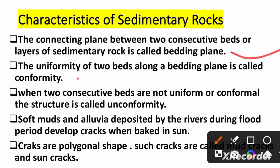When two consecutive beds are not uniform or conformal, the structure is called unconformity. So, uniform beds give conformity and non-uniform beds give unconformity. Soft muds and alluvial material deposited by rivers during flood periods develop cracks when baked in the sun — jab suraj ki rashni uspe jati hai, cracks develop ho jate hai.